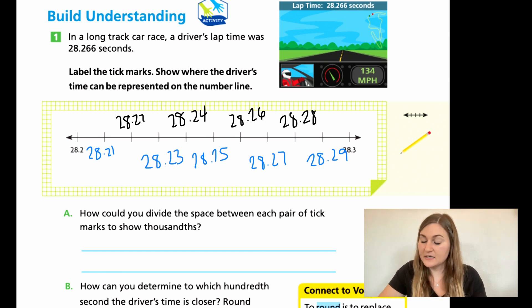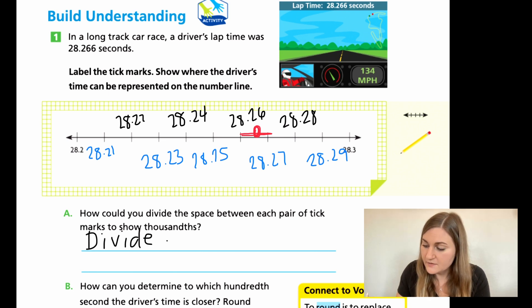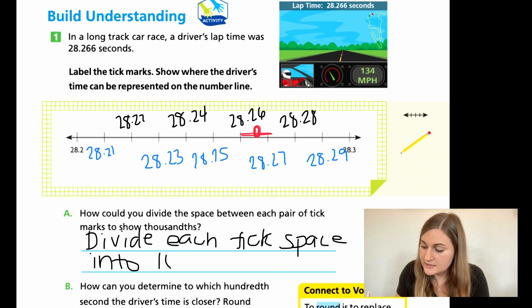Okay, so then it's asking us to mark where 0.266 would be. So on this line, it's going to be between our 26 and 27. And if it's at six, it would be a little bit past half. So I'm going to say about right there is where my point is going to be. All right, moving on to A. It says, how could you divide the space between each pair of tick marks to show thousandths? Just like we did. I kind of just imagine there were 10 tick marks between my 26 and my 27. And I knew six was just past half because half would be five. So what I'm going to do is divide each tick space into 10 pieces.